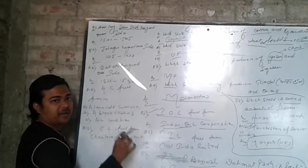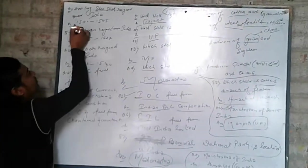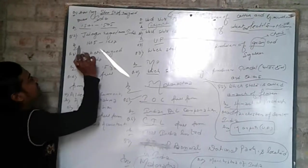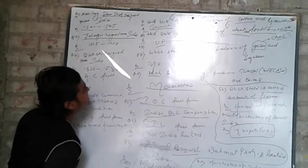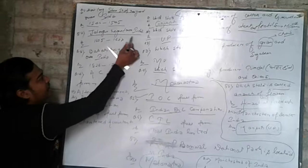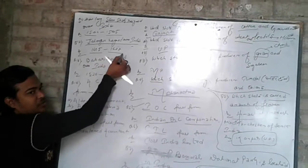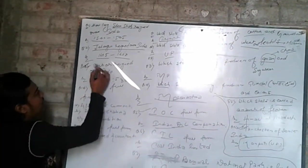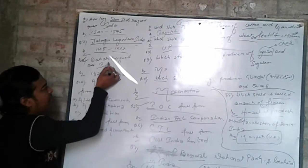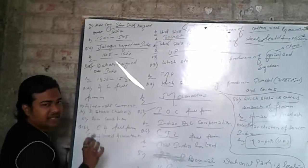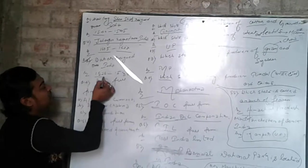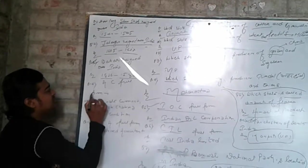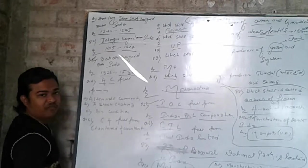Sher Shah Suri ruled over India — how long did Sher Shah Suri rule India? From 1540 to 1545. Next question: Babur ruled over India — how long did Babur rule India? From 1526 to 1530.